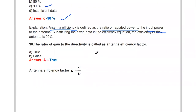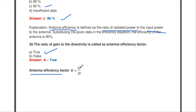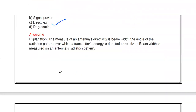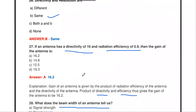The ratio of gain to directivity is also called the antenna efficiency factor — true. So G/D = η, the antenna efficiency. These are some of the important questions about antenna parameters.